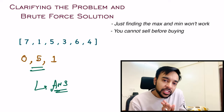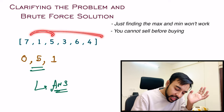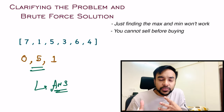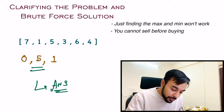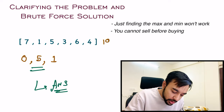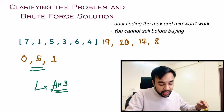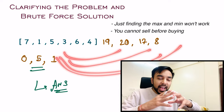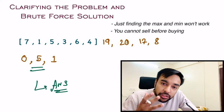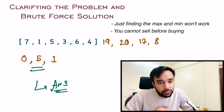But do you see the problem with this approach? You are iterating through the entire array again and again so many times, and that wastes time. Think about it — if I add more elements like 19, 20, 17, 8, you will end up comparing so many values again and again. So you need to think about a more efficient approach to solve this problem.